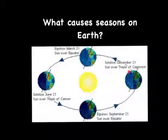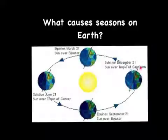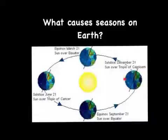In the summertime, the northern hemisphere is tilted towards the sun. In the wintertime, it is tilted away from the sun. If you are in the southern hemisphere, the seasons are just the opposite of what they are in the northern hemisphere.